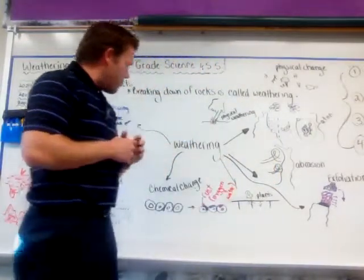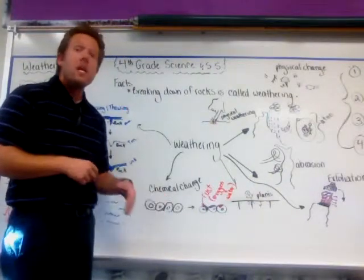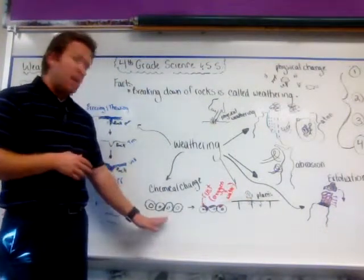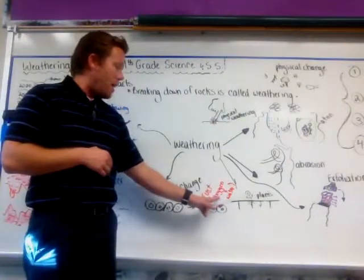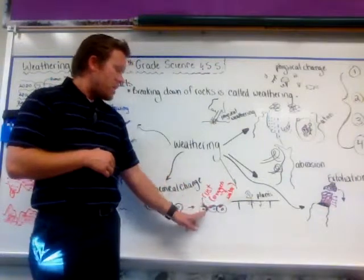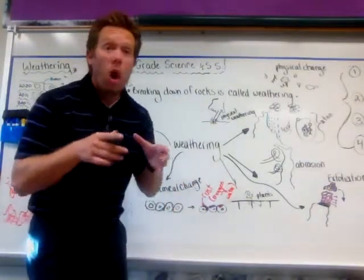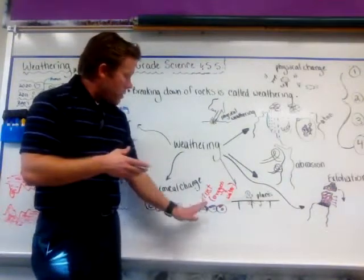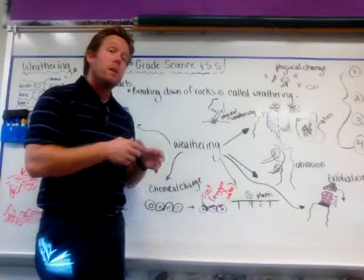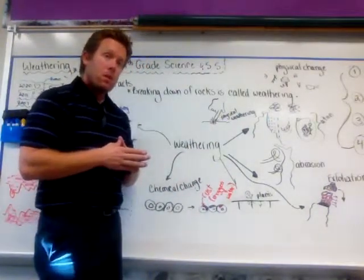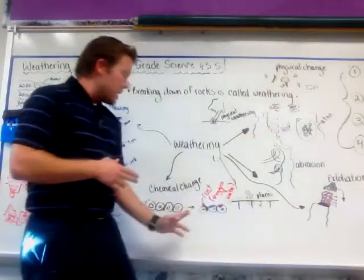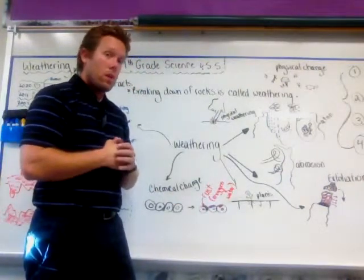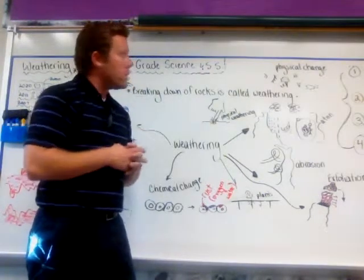The other type of change is called a chemical change. A chemical change is when something new is actually created or formed. For example, you have this iron chain. If you were to add oxygen and water to the iron chain, you get something called rust. Rust is no longer iron anymore — it's something completely new. So this is called a chemical change. Ice cream stays ice cream — that's physical. Iron becomes rust — that's chemical. Keep those two things in mind as we continue this test review.